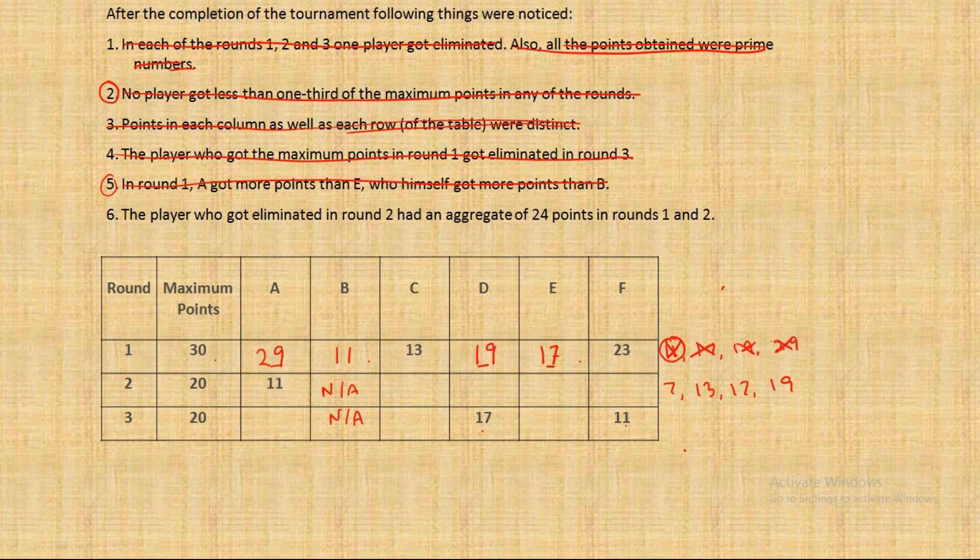Now one thing that will help us is the player who got eliminated in round two has an aggregate of 24 points. Now see, 24 points cannot be C's because for that you have to write 11 here but you cannot write 11 because 11 is someone else's. Cannot be D's because D reaches round three. E has to be the person who gets eliminated in round two.